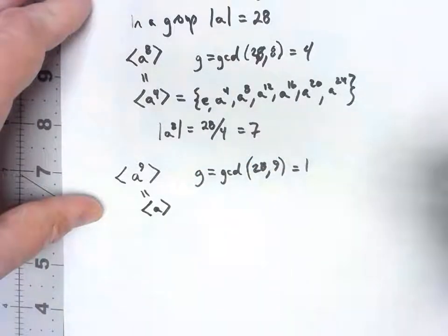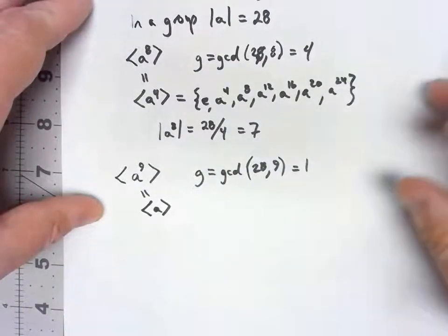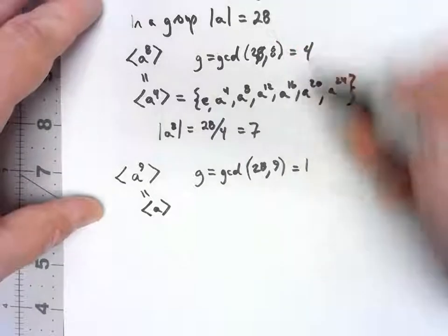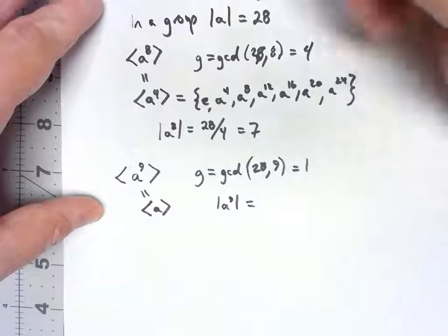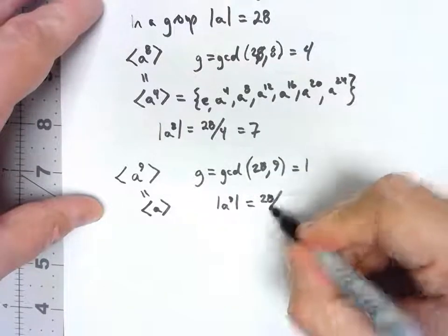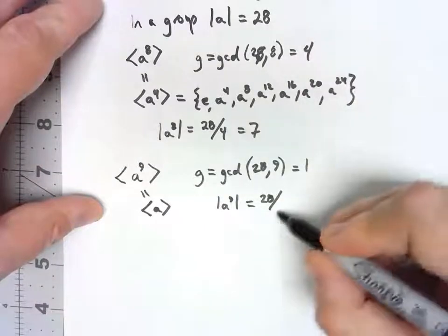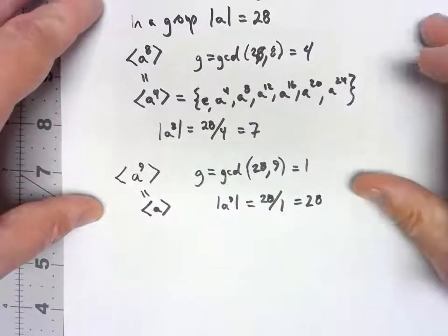I'm not going to list out all 28 elements there, but I know there have to be 28 elements because the order of a^9 is equal to the order of a, 28, divided by that greatest common divisor, 1. The order is 28.